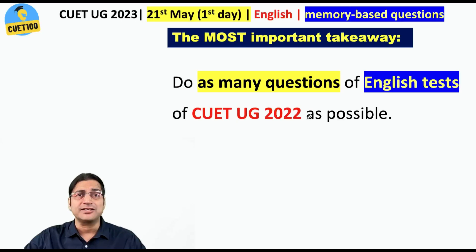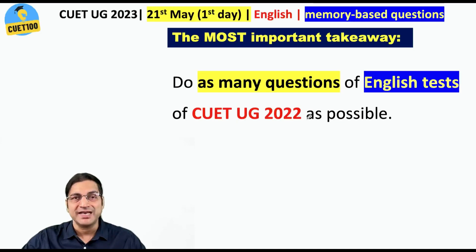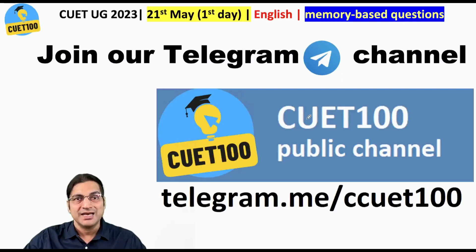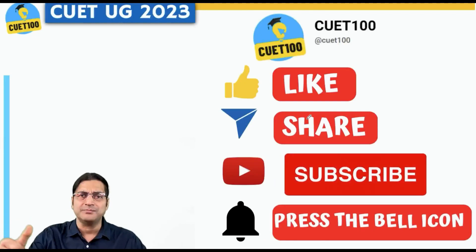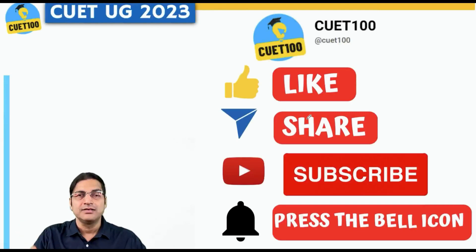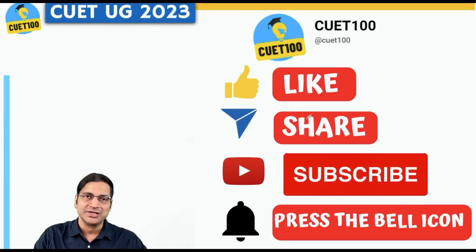Do as many questions of English tests of CUET UG 2022 as possible, because they are still asking from those areas — just not as many. Last year they asked four questions on figures of speech; this time zero, one, or at most two. Be on our Telegram channel where you get many past year CUET UG papers with correct answer keys. If you like this effort, give us a thumbs up and share it with as many friends as possible. Subscribe to CUET 100 and press the bell icon. All the best.